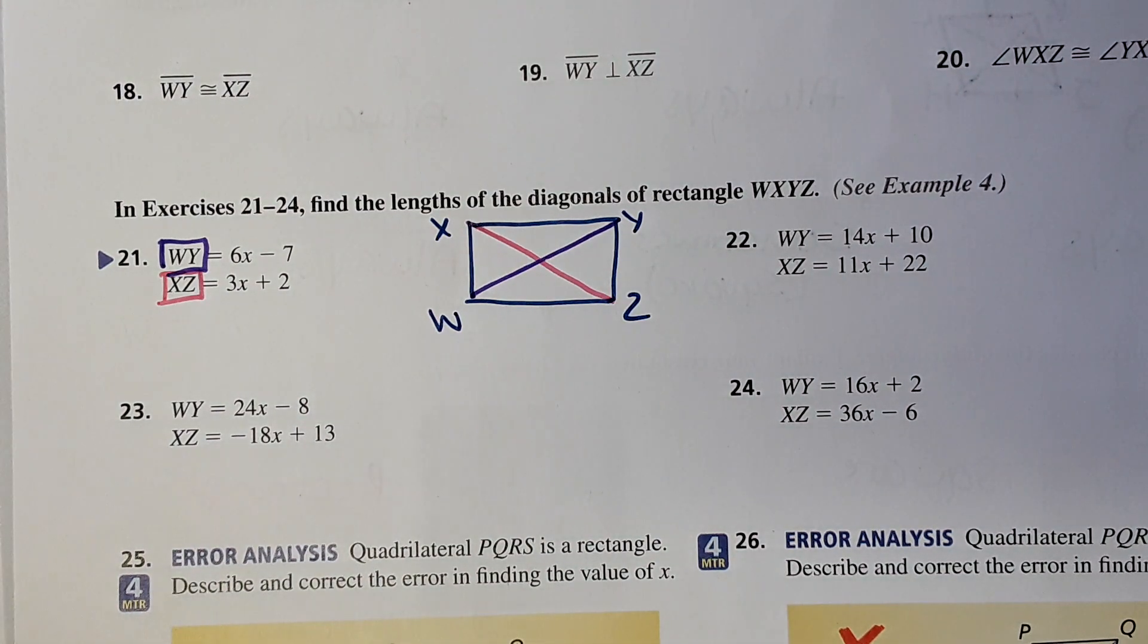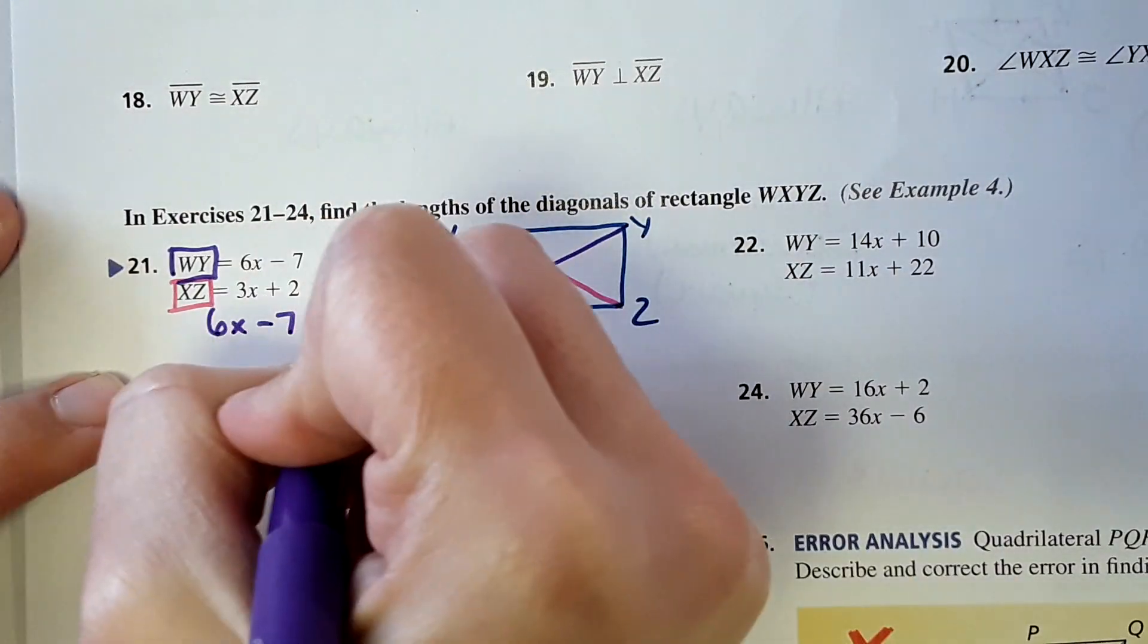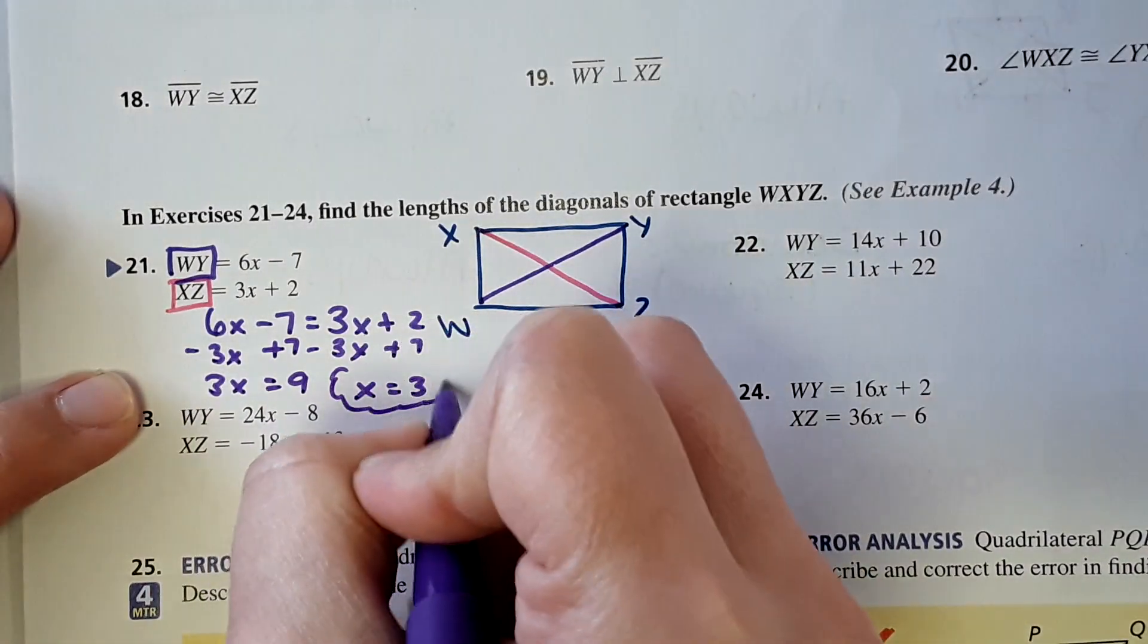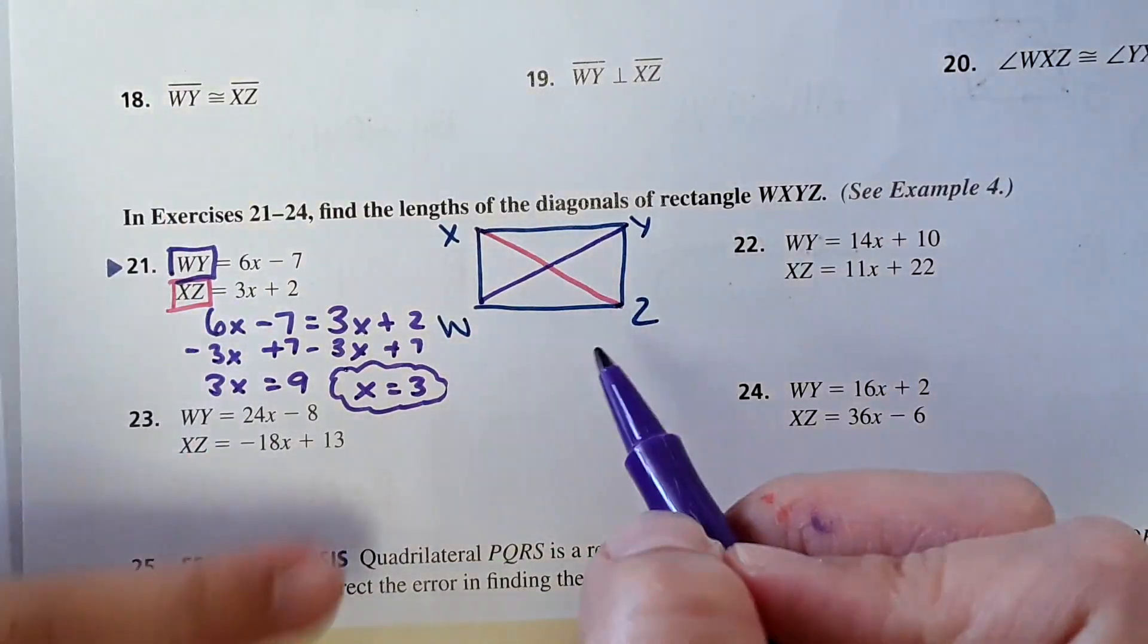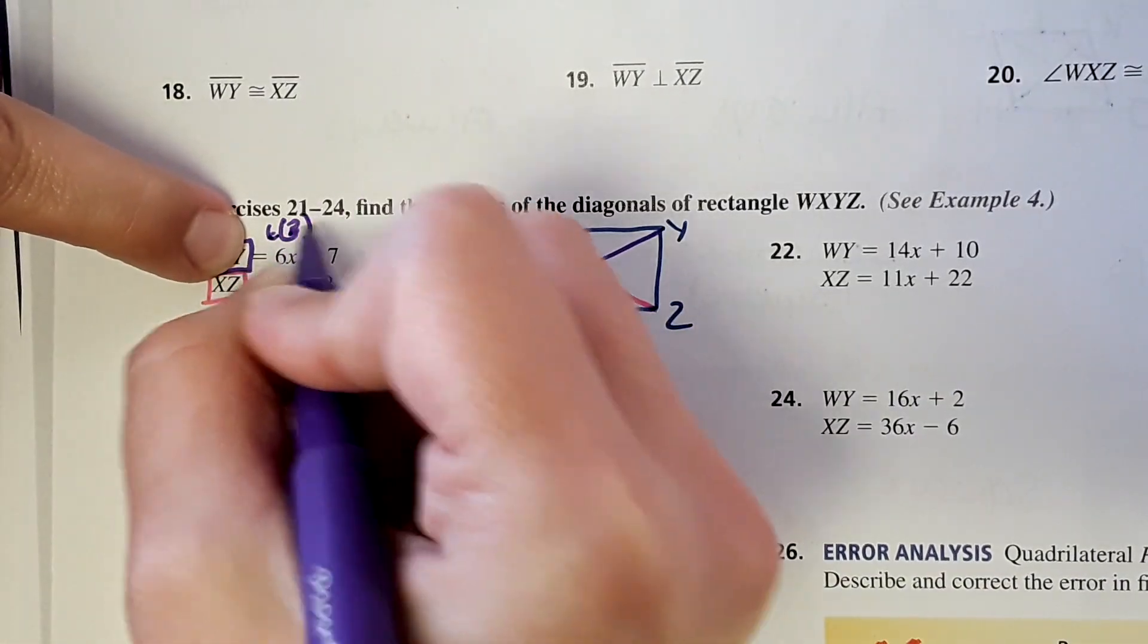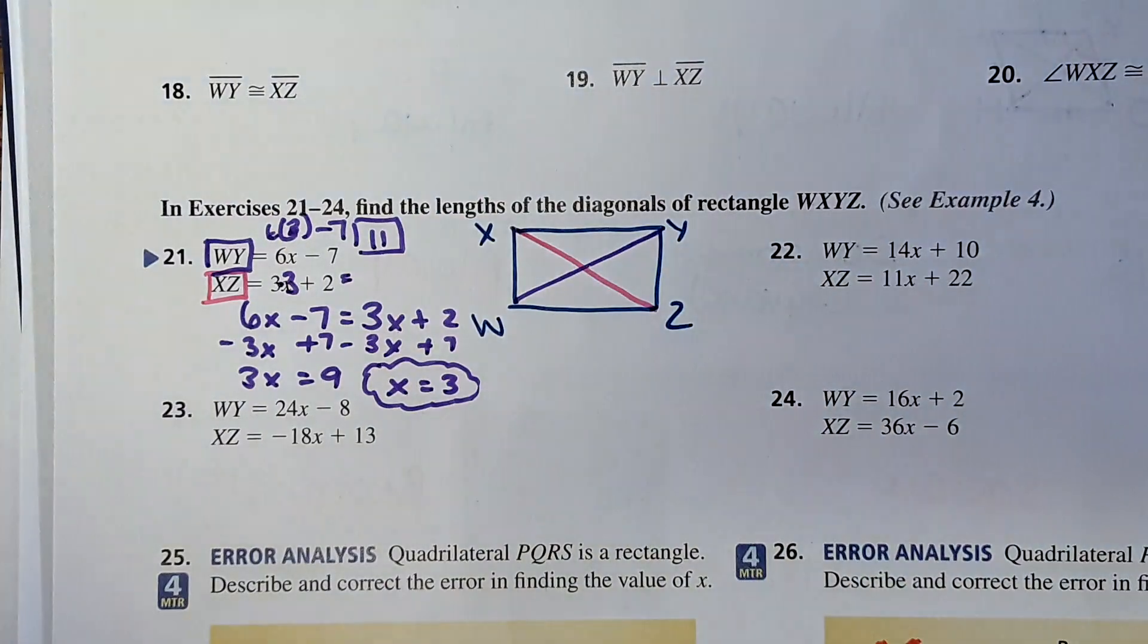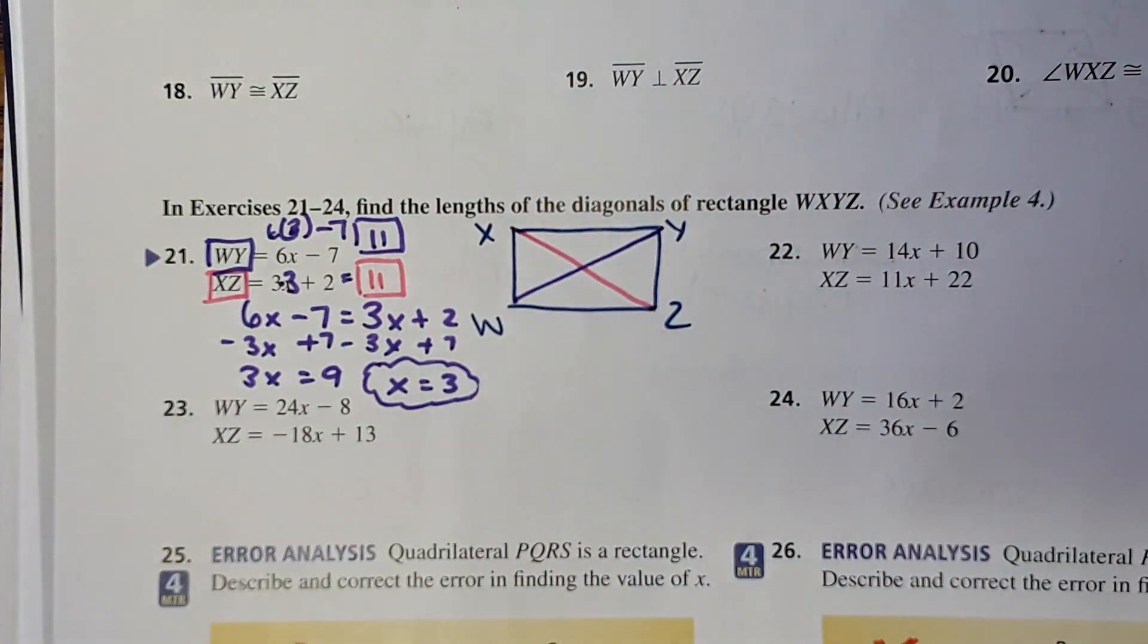It says find the lengths of the diagonals. Well, the diagonals in a rectangle are equal, so you can just set them equal and solve for X. That equals 9. X equals 3. Get X equals 3. But they're actually asking for the length of the diagonal. So once you get X, you can just plug it in. 6 times 3 minus 7. 18 minus 7 is 11. And again, plug in 3. 9 plus 2 is 11. So we're good. It should come out to the same number since the diagonals are equal, so we're good.